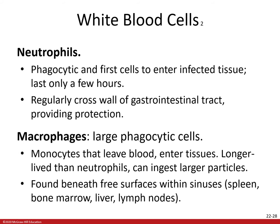These cells only last a few hours but regularly cross the wall of the gastrointestinal tract to provide protection in the digestive tract. One thing neutrophils cause is pus — that whitish, yellowish, thick fluid which is the accumulation of dead neutrophils, dead microorganisms, debris from dead tissues, and fluid. Pus is a byproduct of your neutrophils fighting hard to help your body fight off an infection — worth a new appreciation for neutrophils.